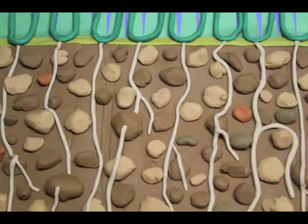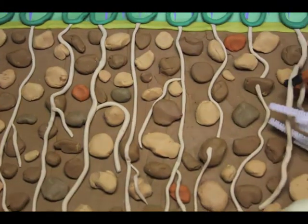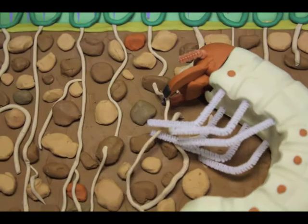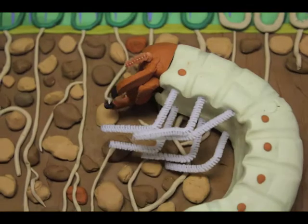Below the surface of this backyard lawn, the grub of a scarab beetle feeds on the roots of the grass, threatening to kill it and deface the lawn.